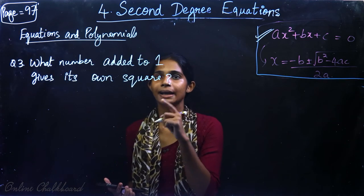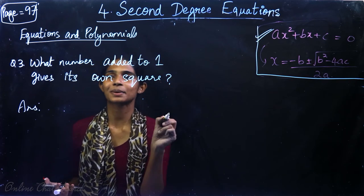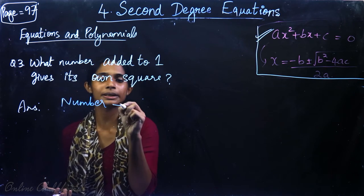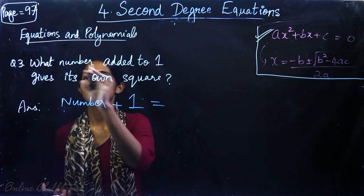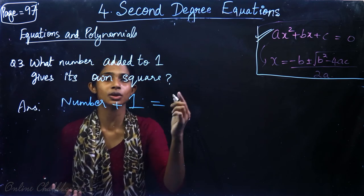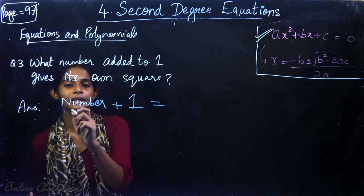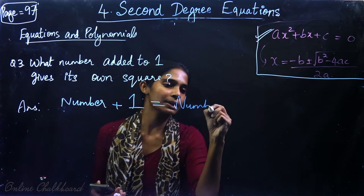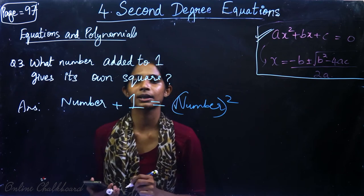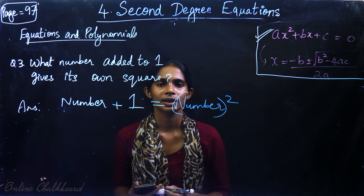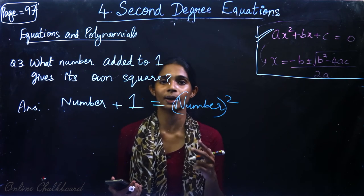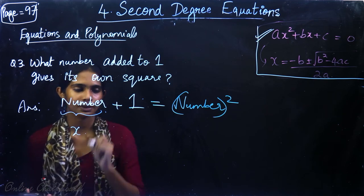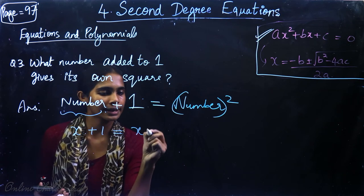Question number 3: What number, when 1 is added to it, gives its own square? When 1 is added to the number, the result equals that number's square value. Let us call that number x. Now we have x plus 1 is equal to x².